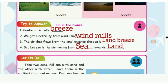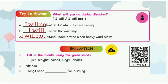Then page number 101, fill in the blanks. First: gentle air is called breeze. Second: we get electricity from wind using windmills. Third: the air that flows from the land towards the sea is land breeze. Fourth: sea breeze is the air moving from sea towards land. Then page number 102.